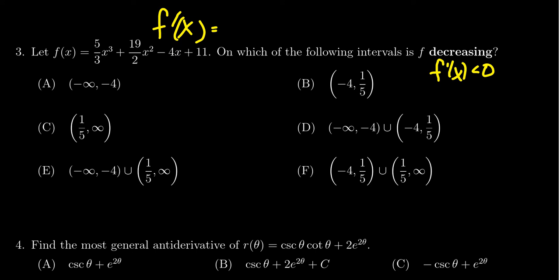If we calculate the derivative by the usual power rule, the derivative is going to look like: (5/3)x³ becomes 5x², (19/2)x² becomes 19x, the derivative of -4x becomes -4, and the derivative of 11 is zero. So f'(x) = 5x² + 19x - 4.